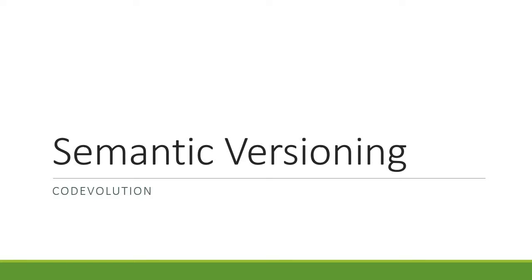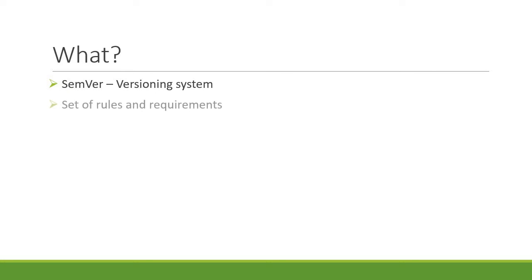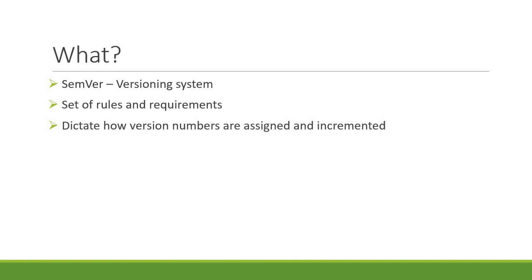Semantic versioning, also known as semver, is one of the most widely adopted versioning systems. It is a simple set of rules and requirements that dictate how version numbers are assigned and incremented.